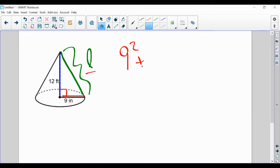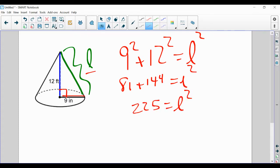9 squared plus 12 squared is equal to L squared. So 81 plus 144 is equal to L squared, or 225 is equal to L squared. Square root both sides, and L is 15. So I have a slant height of 15 inches.